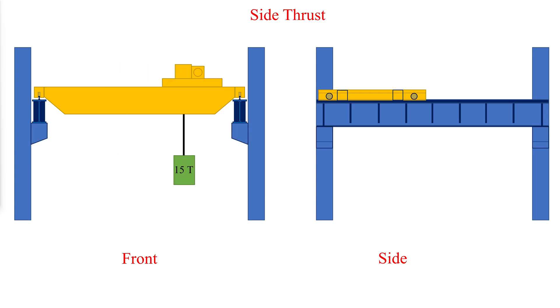Horizontal forces act on crane runways due to a number of factors including runway misalignment, crane skew, trolley acceleration and trolley braking, and also crane steering.